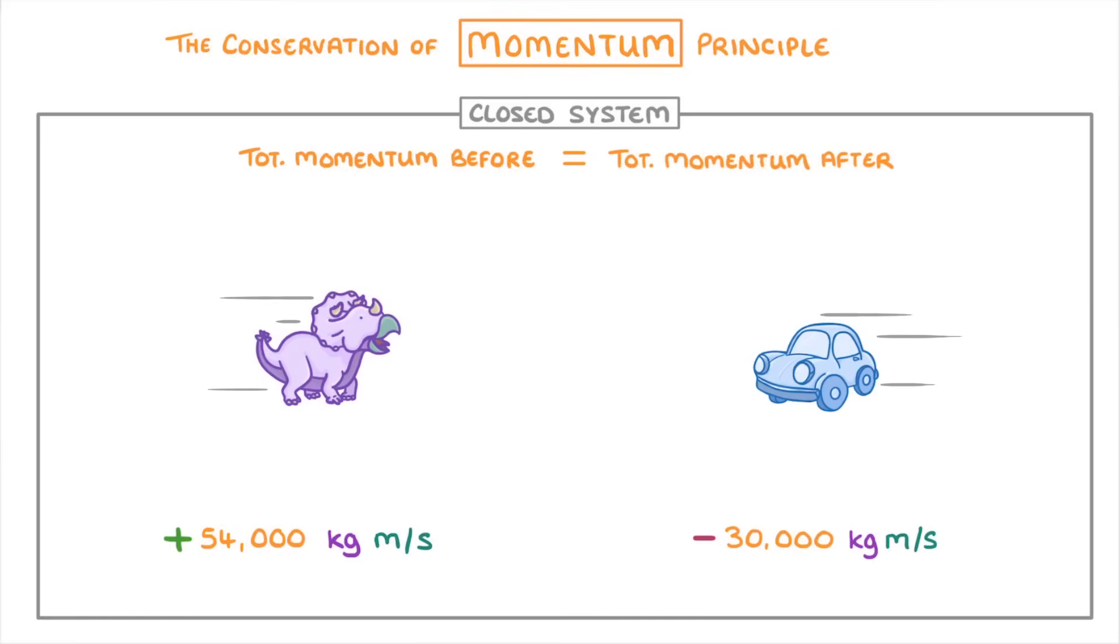To see how this works, let's imagine our dinosaur and our car as two particles, which are travelling towards each other and are going to collide. After which, they'll both continue moving together at the same speed.